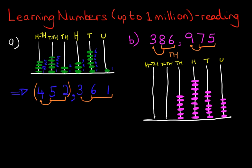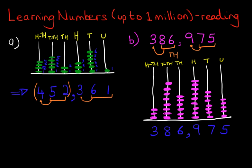The next one is ten thousands, and here we have eight: one, two, three, four, five, six, seven, eight. And the hundred thousands is three: one, two, three. Notice how this mirrors that number. We've got 386,975.